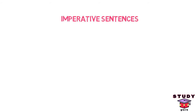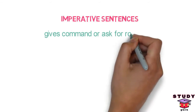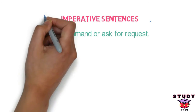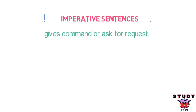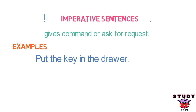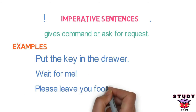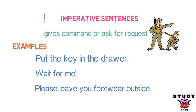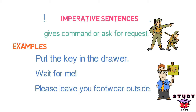Imperative sentences. Imperative sentences give a command or ask for a request. They end with a period or exclamation mark depending on how forcefully you say the sentence. If the sentence is spoken more forcefully, an exclamation mark is used; otherwise, a period is used. For example, 'Put the key in the drawer.' 'Wait for me.' 'Please leave your footwear outside.' So, whenever you are giving a command or asking for help or making a request, imperative sentences are used.